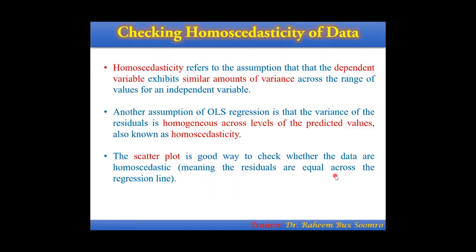So what is homoscedasticity? Homoscedasticity refers to the assumption that the dependent variable shows a similar amount of variance across the range of your independent variable values. Alternatively, we can say it is homogeneous across the levels of predictor values — this is also known as homoscedasticity.